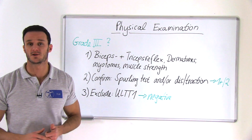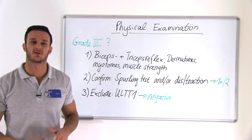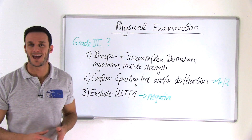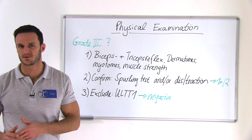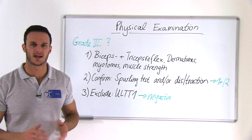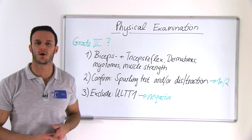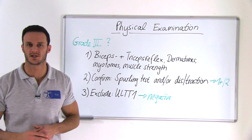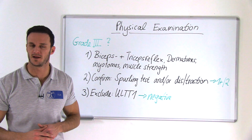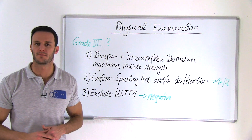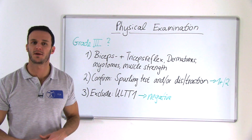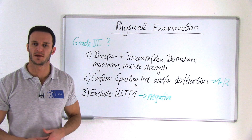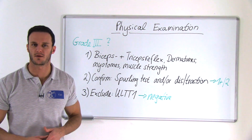The first thing you should do is examine your patient's biceps and triceps reflex, test different dermatomes of the arm and hand for changes in sensibility, and evaluate different myotomes in your patient's arm and hand for diminished muscle strength.